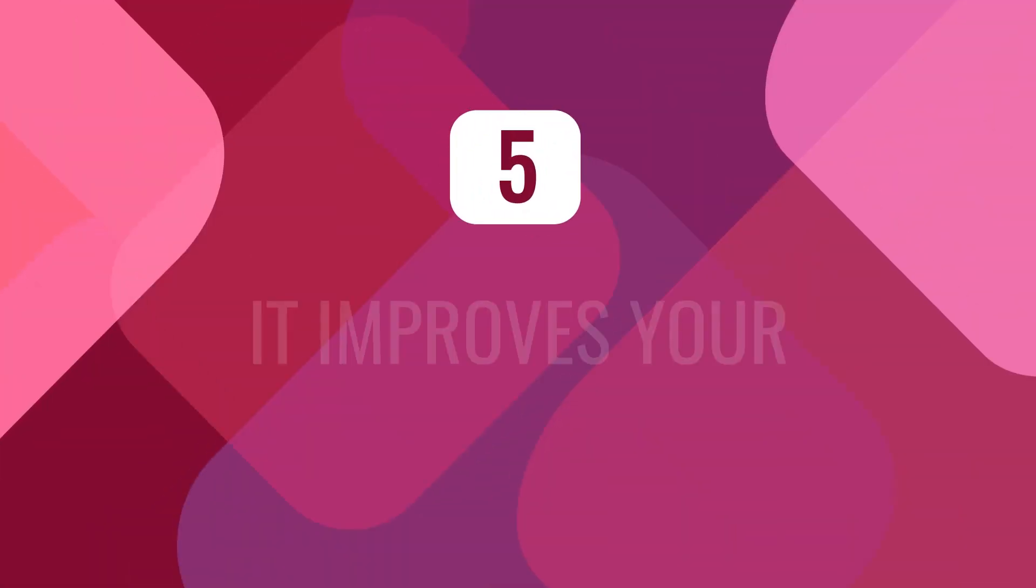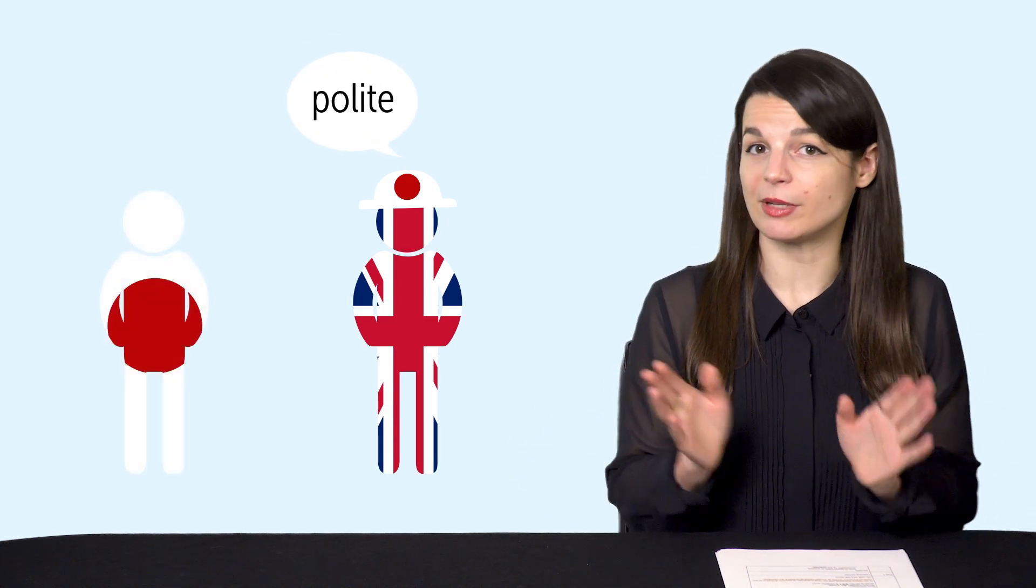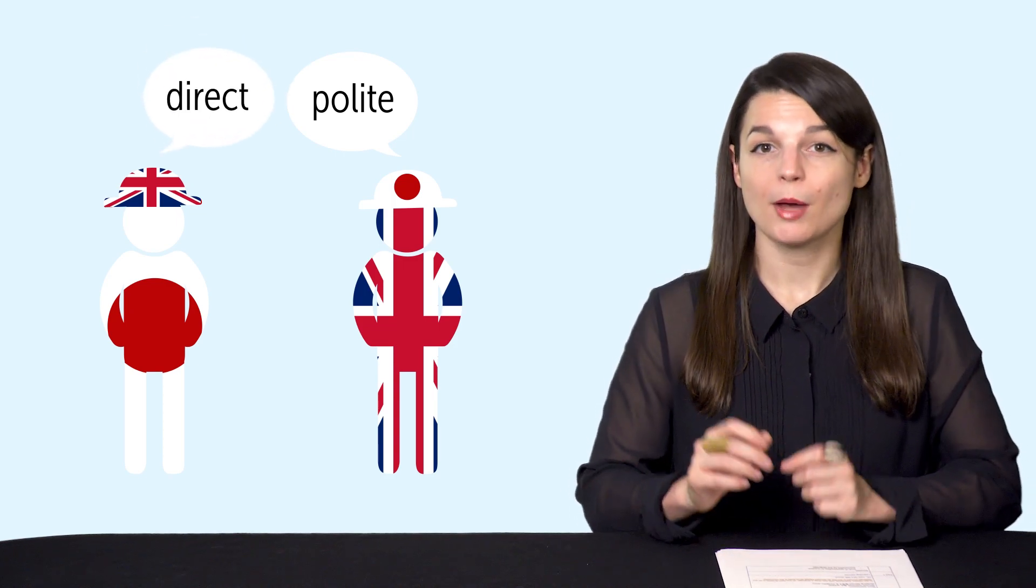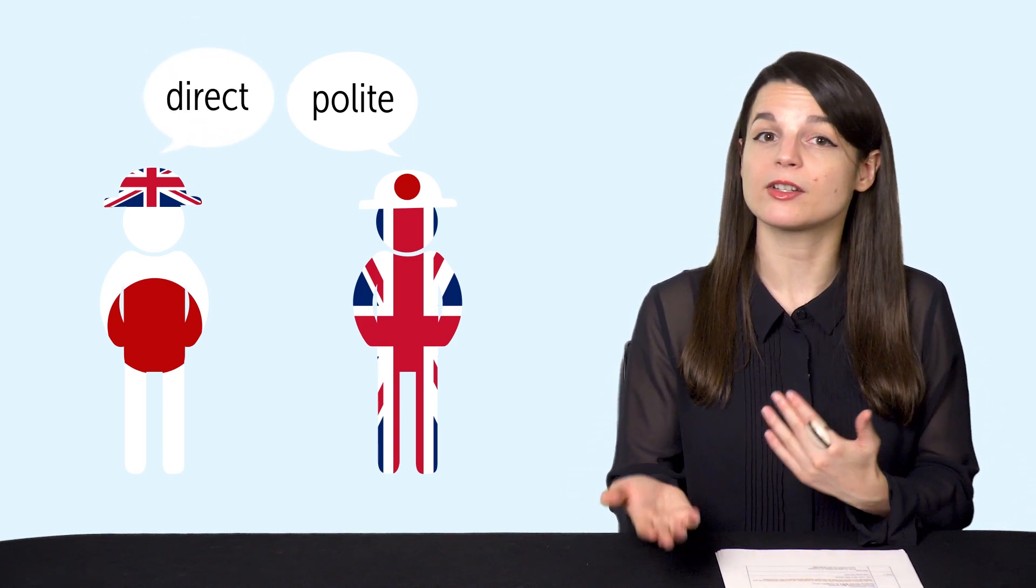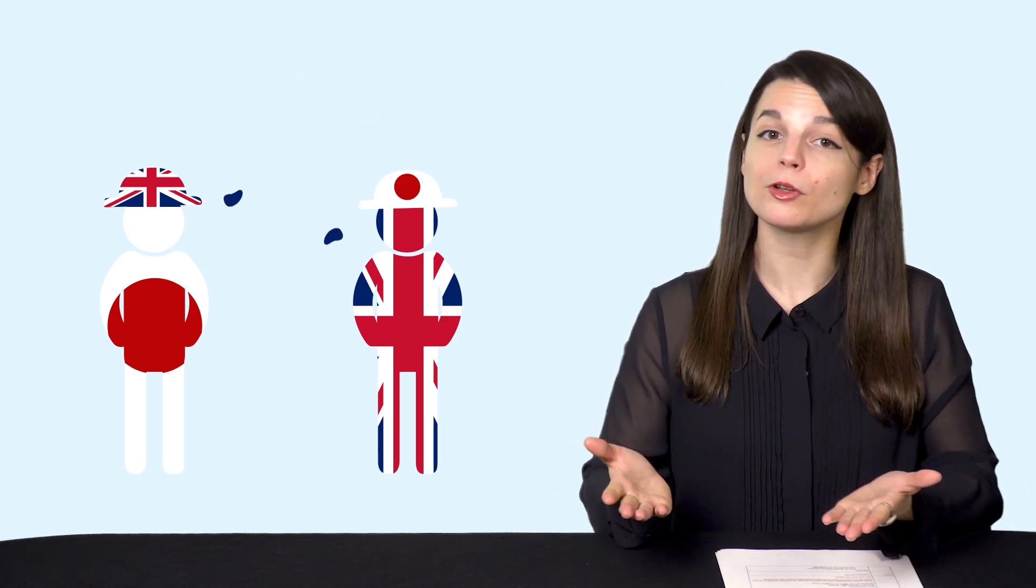Number five, it improves your understanding of the world. For example, people learning Japanese sometimes mention they feel more polite when speaking in Japanese, and native Japanese speakers sometimes express that they can be more direct in English. By thinking and speaking in a different language, people consider different ways of communicating. This can change your perspective and improve your understanding of the ways other people experience the world.